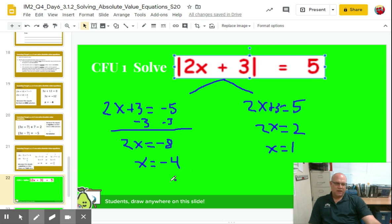Let's do our check here, just mentally. I'll just say it out loud for you. 2 times negative 4, that's negative 8. Negative 8 plus 3, negative 5. The absolute value of negative 5 is 5. 5 equals 5, check.